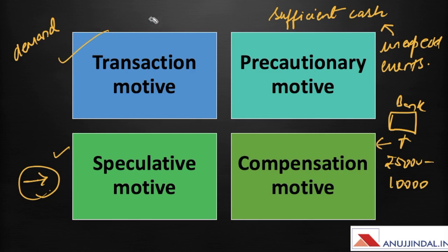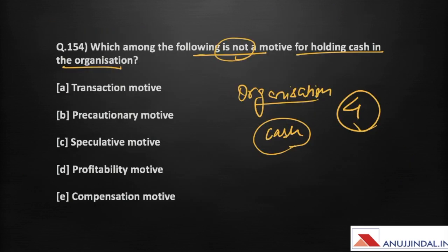So these are the four motives for holding cash: transaction, precautionary, speculative, and compensation. Therefore, the answer is the profitability motive — that is option D — which is not a motive for holding cash.